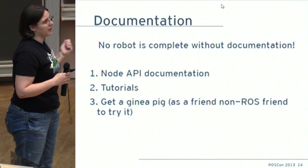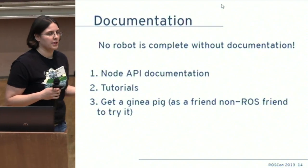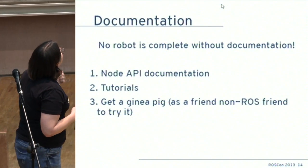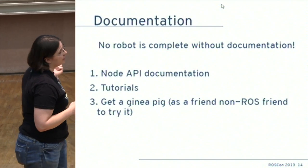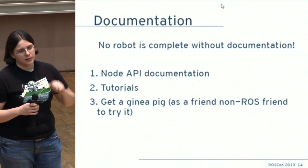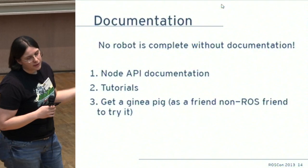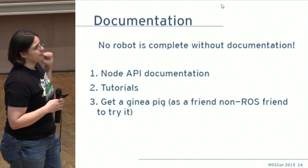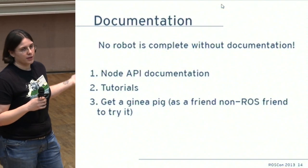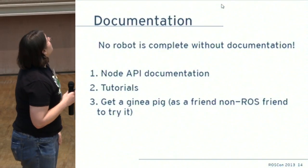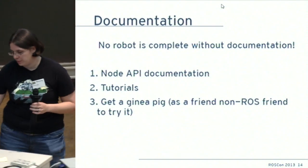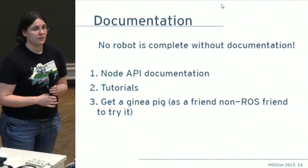Finally, the most important thing about all robots and ROS in general is documentation. If you want anyone to use your stuff, you need to document it — document the node APIs, document through tutorials, make sure it's easy for people to use. If you're really diligent, get someone who knows nothing about ROS or your robot to go through your tutorials. It really helps and it's what keeps ROS going and makes it such a great community.